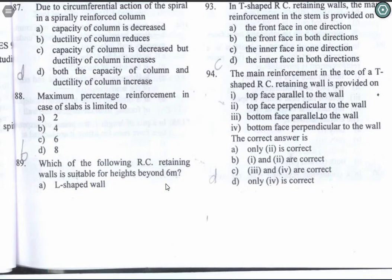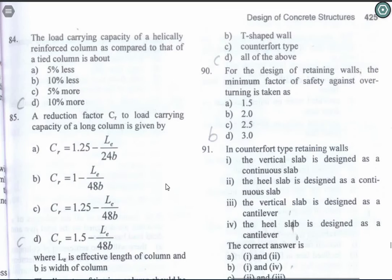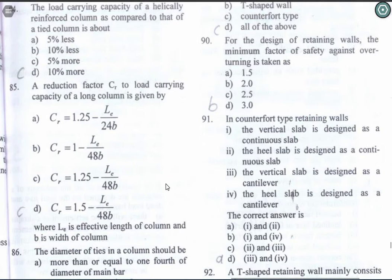Question 89: Which RC retaining wall is suitable for height beyond 6 meters? The correct answer is counterfort — Option C. Beyond 6 meters we use a counterfort retaining wall; below 6 meters we use a cantilever retaining wall. Question 90: For the design of a retaining wall the minimum factor of safety against overturning is taken as 2. Option B is the correct answer.